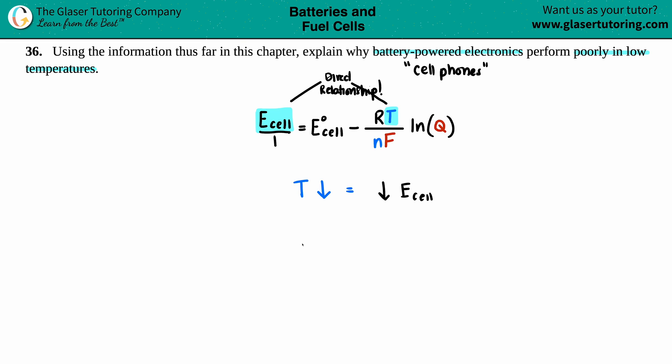And just know that a dead battery always means that you have an E cell of zero, zero volts. So, that's the idea here, is that if you have very low temps, that E cell is going to start dropping and dropping and dropping. And if it drops so low to zero, it's automatically going to be dead.